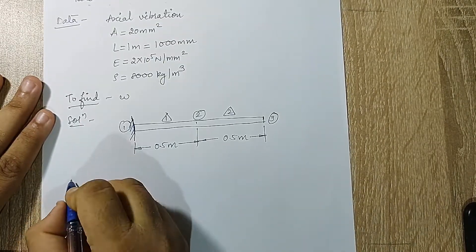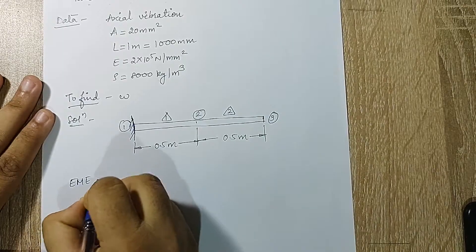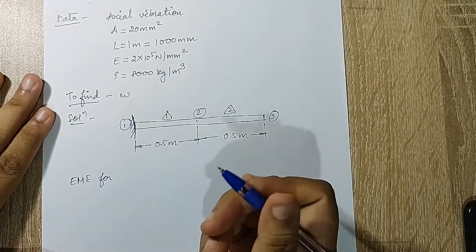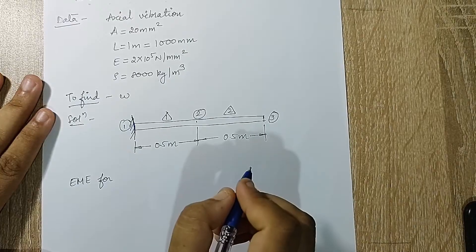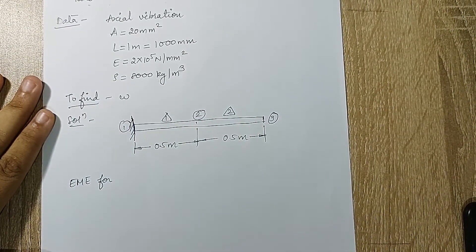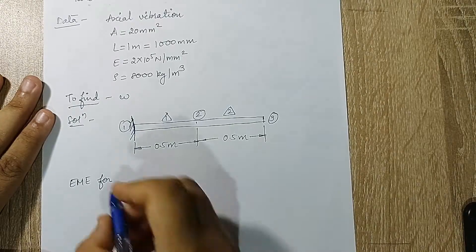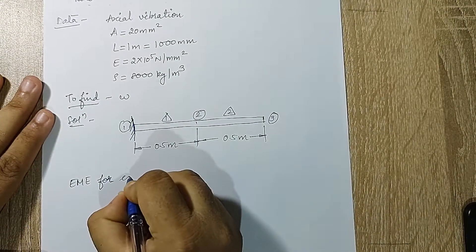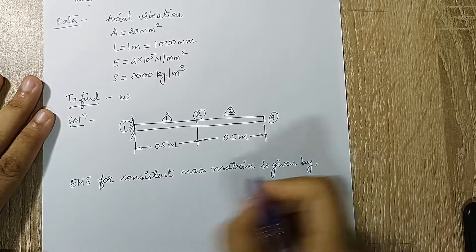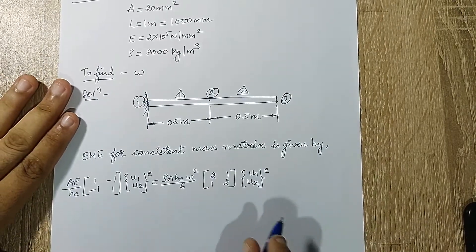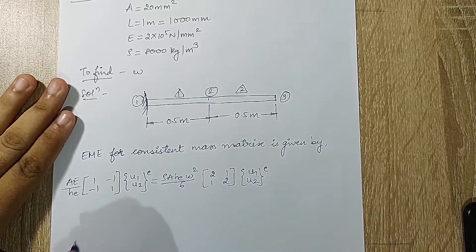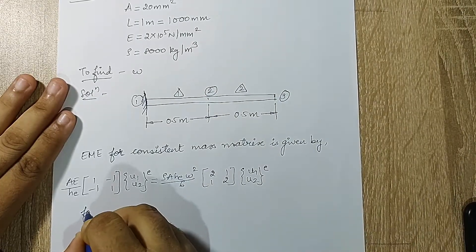We will write the element matrix equation (EME). Since the method is not specified, we solve using the consistent mass matrix. The EME for the consistent mass matrix is written, and we will substitute values to solve for element 1.